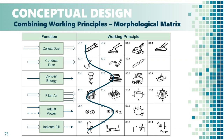Here is our proposal. It combines a more complex solution for collecting dust. Conducting it would make use of a pipe with extendable length. The vacuum creation and air filtering would use more sophisticated and therefore more efficient and quiet working principles. The power knob would allow a wide range of adjustment, and the fill would be measured with the help of an active proximity sensor. As you can see, both working structures address different customer needs reflected in the requirements list.